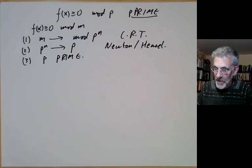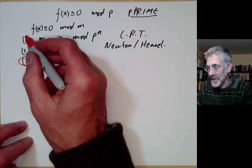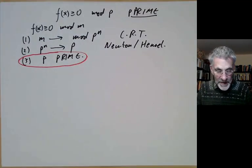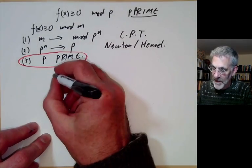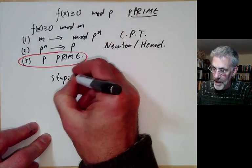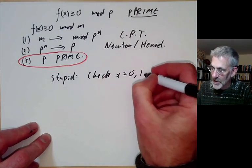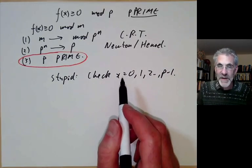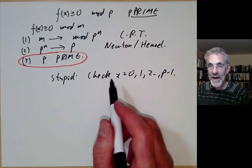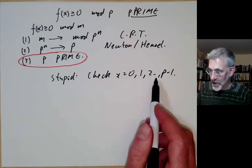The third case is when p is a prime. If we can solve the case when p is a prime, then we can sort of solve the case working modulo any number. This lecture will be about this case, and previous lectures were about the other two cases. How can we solve modulo p a prime? First of all, there's the stupid method where we check x = 0, 1, up to p−1.